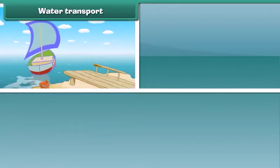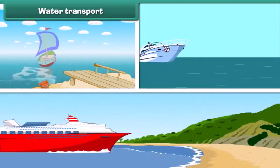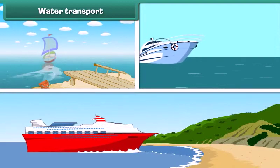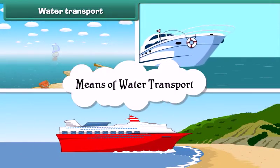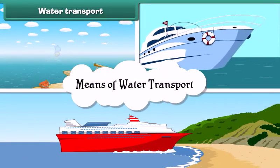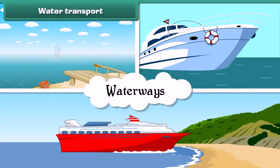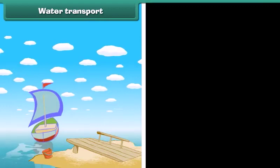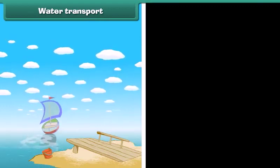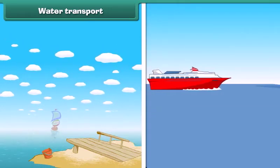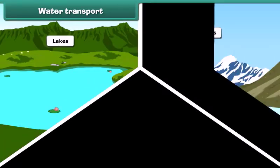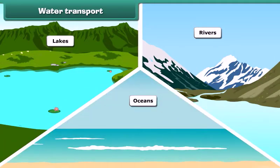You have seen boats, steamers and ships. These are the means of water transport. These vehicles run through waterways. Boats run in lakes and rivers while ships run in deep and large water bodies. Lakes, rivers and oceans are the examples of waterways.